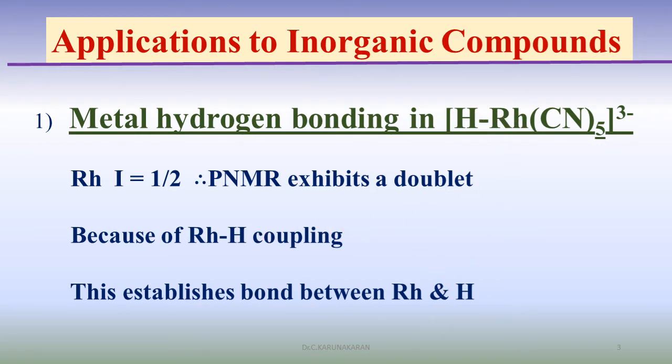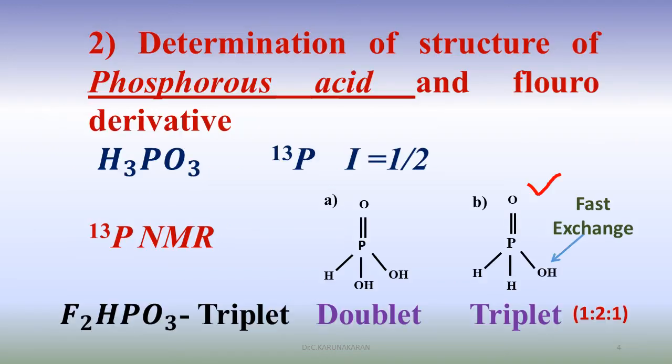The structure of phosphorus acid is elucidated using phosphorus NMR. The formula of phosphorus acid is H3PO3. There are two possible structures. In this case, phosphorus-31, I equal to 1/2. Using phosphorus NMR, this compound will give a doublet, whereas this compound will give a triplet.